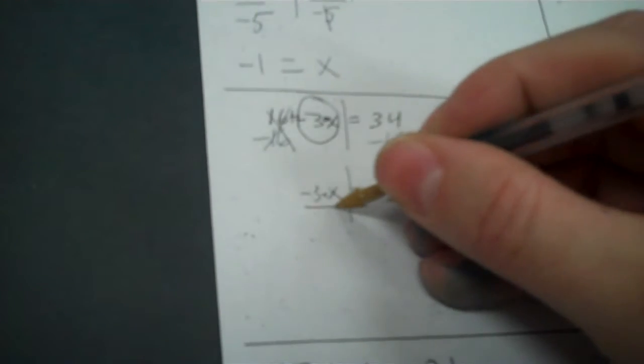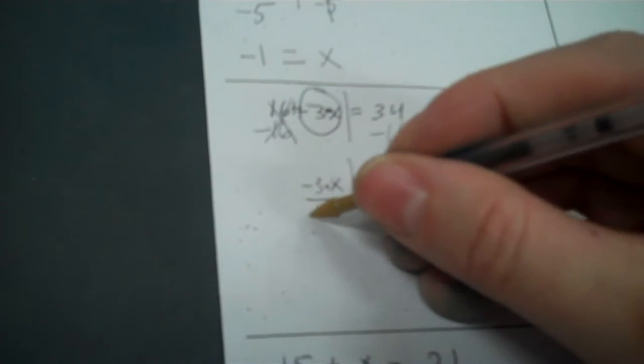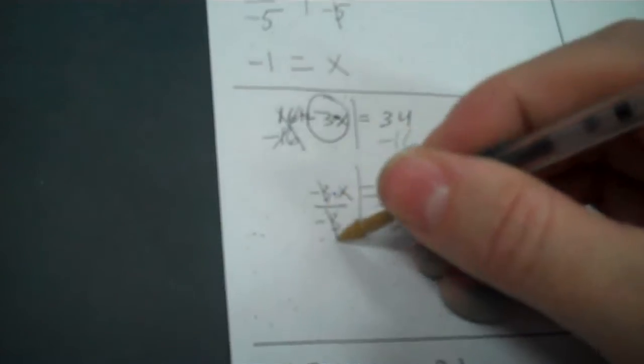Between them you've got times, so you divide by negative 3. And 18 divided by negative 3 is going to be negative 6.